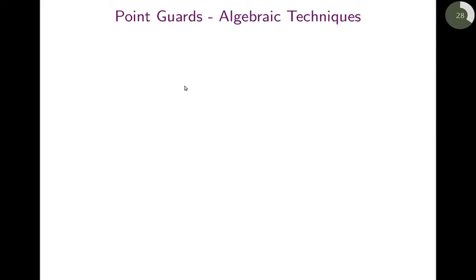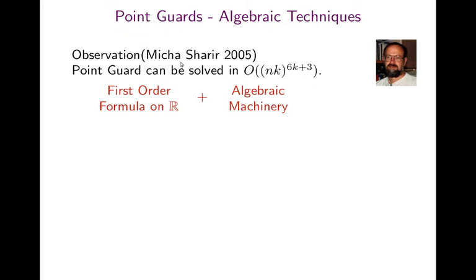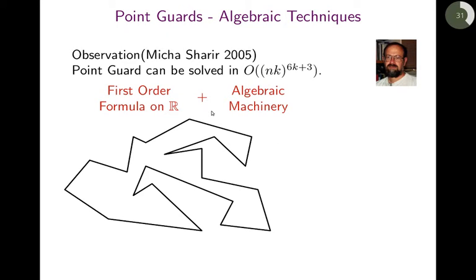Okay, so the same holds for the point guard variant, but it's a little more sophisticated and less well-known. So if you have the point guard variant, then Michael Scheria observed that there is an O of n times k to the 6k plus 3 algorithm. So basically, n to the O of k. And his idea is very simple. He formulates the art gallery problem with the first order formula over the reals plus some algebraic machinery.